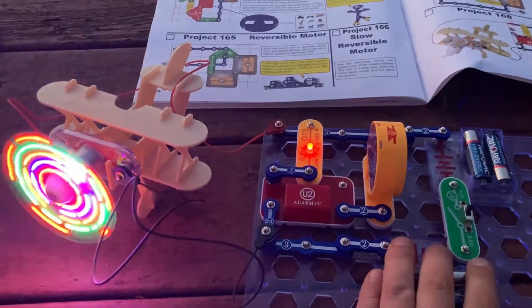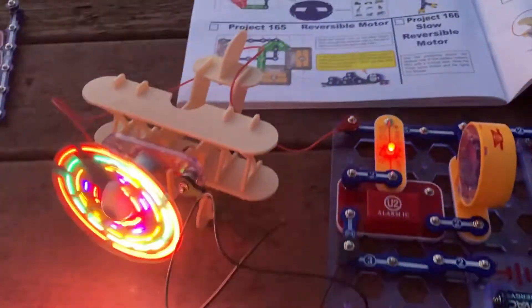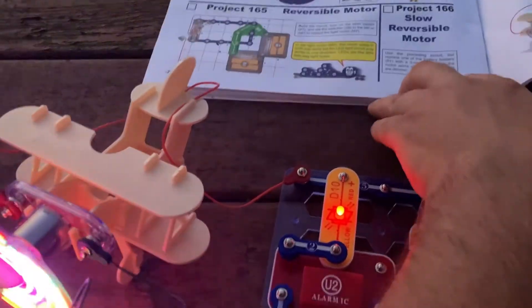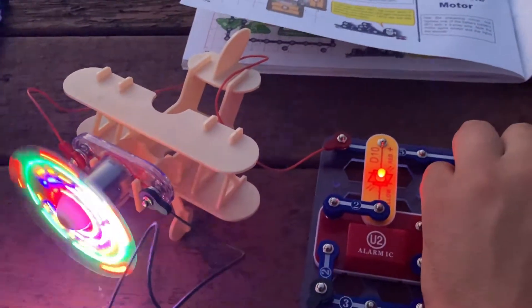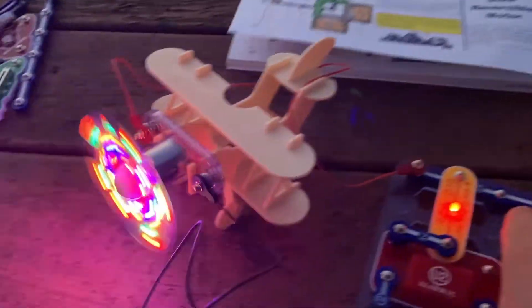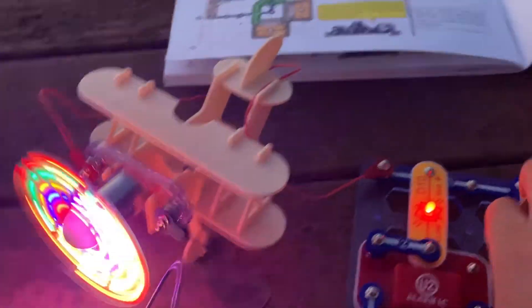An alarm sounds, the bicolor LED lights up, and the light motor spins and lights up on the airplane, and the direction in which the motor is rotating is pushing the plane backwards.